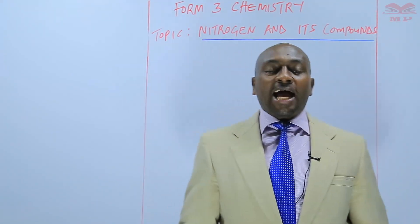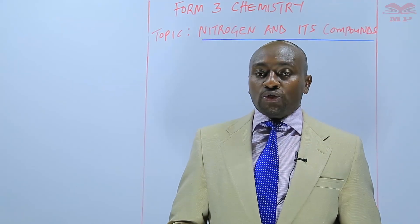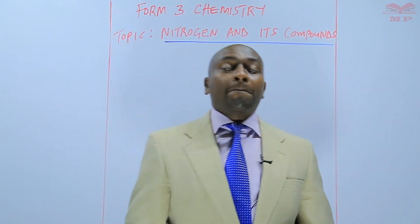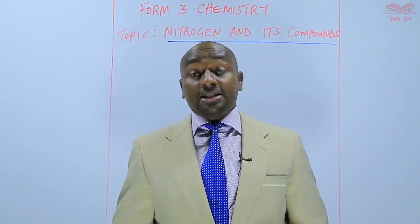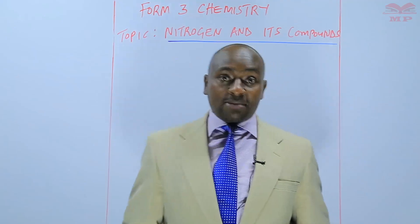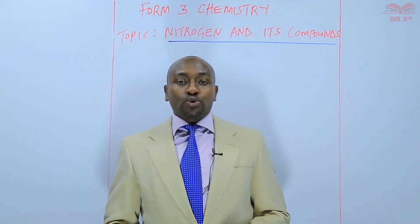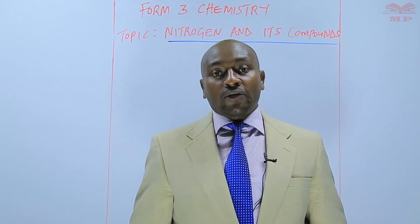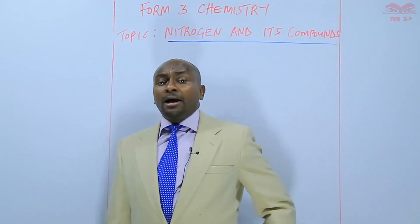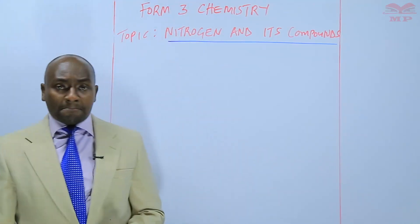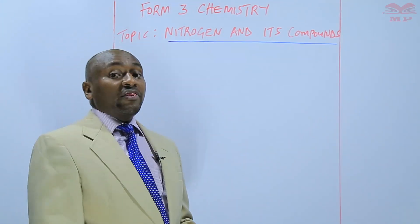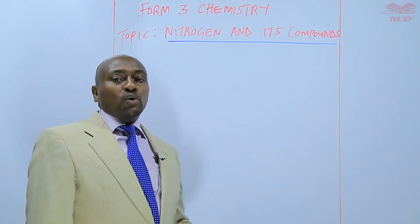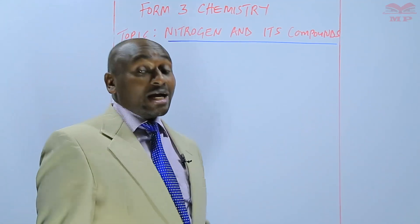We are going to look at an alternative method of preparing nitrogen dioxide. Previously, we saw that nitrogen dioxide is prepared by the action of concentrated nitric acid on copper turnings. Today we are going to look at an alternative method, which is through thermal decomposition of metal nitrates. Metal nitrates that are below sodium in the reactivity series, when they go through thermal decomposition — that means decomposition by use of heat — they break down in such a way that nitrogen dioxide is produced as one of the gases.